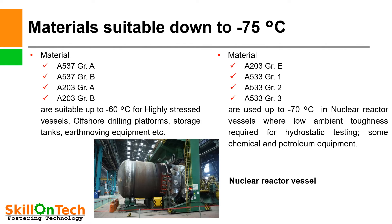And materials A203 grade E, A533 grade 1, A533 grade 2, and A533 grade 3 are used up to –70°C in nuclear reactor vessels. An example of a nuclear reactor vessel is shown. Where low ambient toughness is required for hydrostatic testing, some chemical and petroleum equipment can also use these materials.